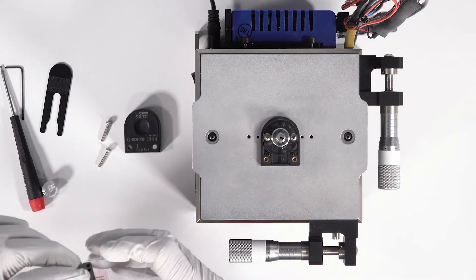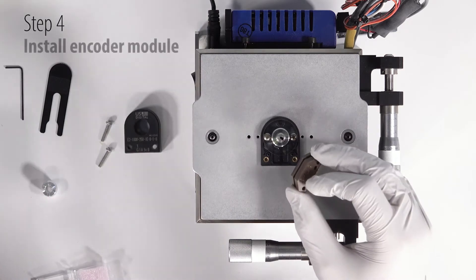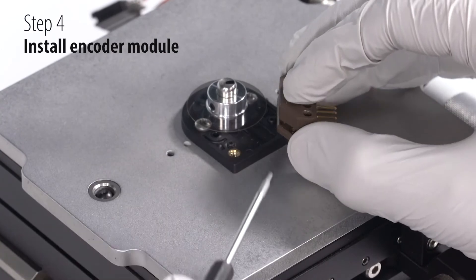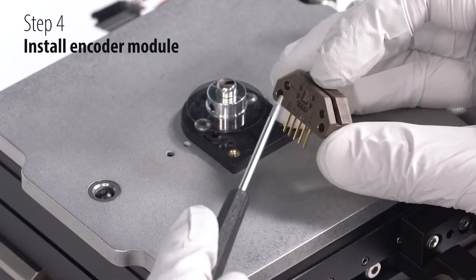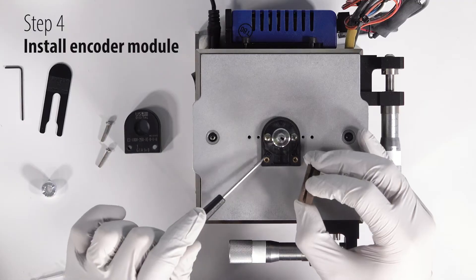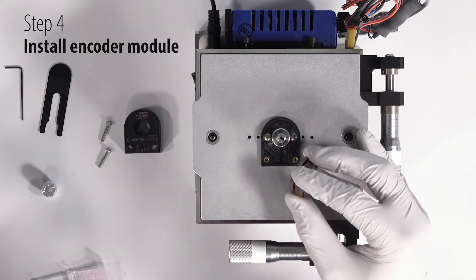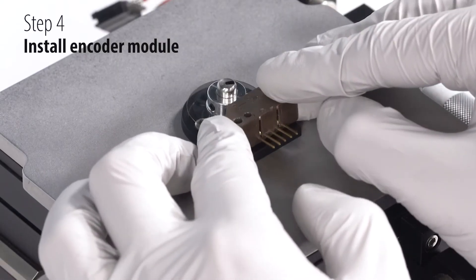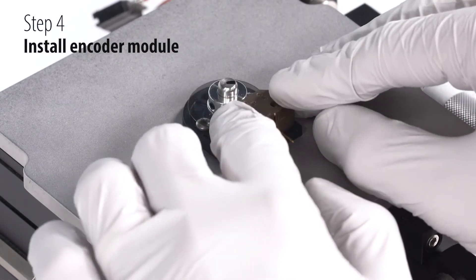In step four, we're going to install the optical module. For the E2, this thinner portion of the module will be pointed down towards the mounting base. You'll notice these two holes which will fit into these two pins on the mounting base. So we can slide this in and clip it down into place.